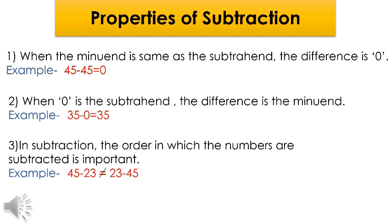We cannot subtract a bigger number from a smaller number, but we can subtract a smaller number from a bigger number. For example, we can take away 23 from 45, but we cannot take away 45 from 23. So 45 minus 23 is not equal to 23 minus 45. Remember to always subtract a smaller number from the larger number.